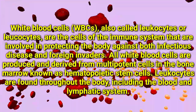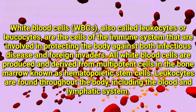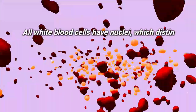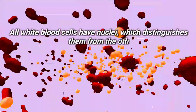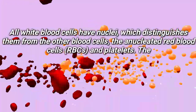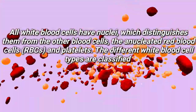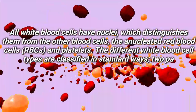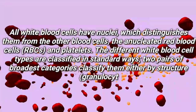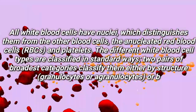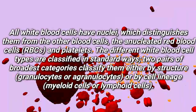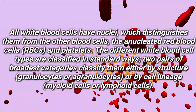Leukocytes are found throughout the body, including the blood and lymphatic system. All white blood cells have nuclei, which distinguishes them from the other blood cells — the anucleated red blood cells and platelets.